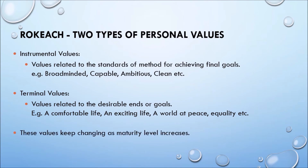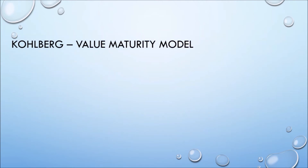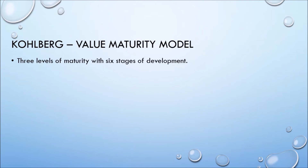These values keep changing as maturity level increases. Kohlberg's value maturity model describes three levels of maturity with six stages of development, where each stage represents improved maturity.